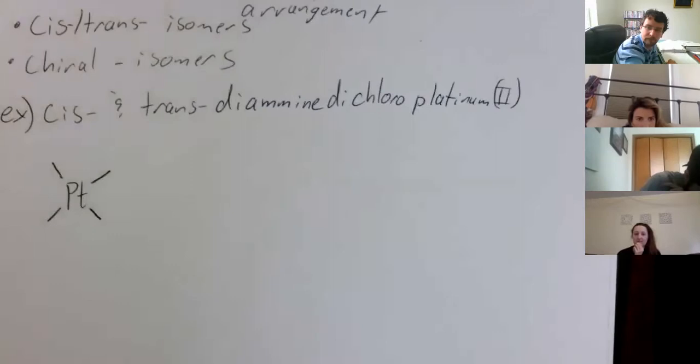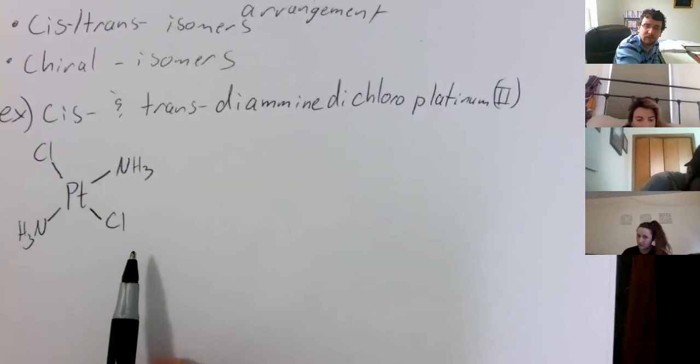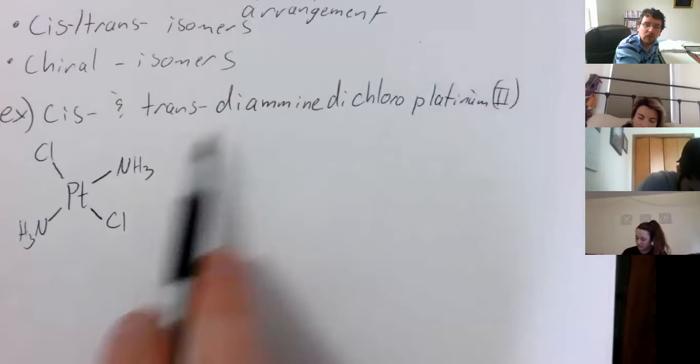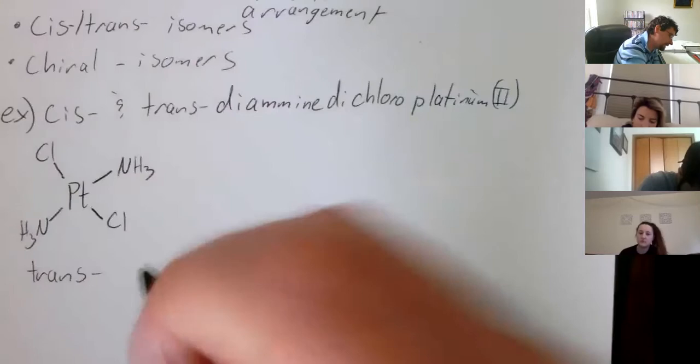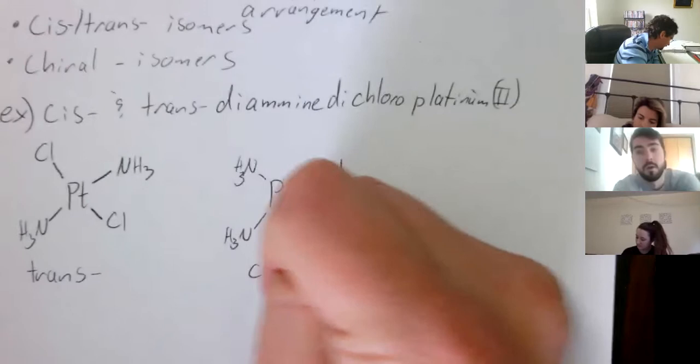The cis form just has the same ligands on the same side. Octahedral complexes can have cis/trans isomerism too. Let's look at another example: cis and trans tetraaminedibromo cobalt(III). Can anyone tell me the formula? It would be [Co(NH₃)₄Br₂], and the type of complex is octahedral.